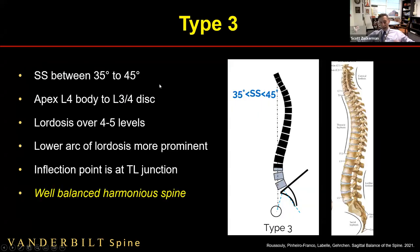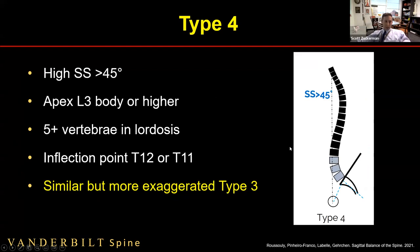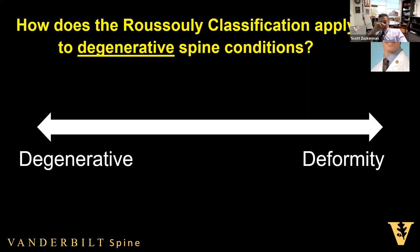Type 3 is the spine as Netter drew it in our textbooks — a well-balanced, harmonious spine. Sacral slope is between 35 and 45, the lower arc of lordosis is more prominent, and the apex moves up to about L3-4. The TL junction is neutral. Type 4 is basically an exaggeration of Type 3: higher sacral slope, higher PI, potentially five-plus vertebrae in lordosis, and the inflection point can be at T12, T11, or even higher. As Mike Kelly says, spine surgery is a spectrum — degenerative and deformity are really different sides of the same coin.